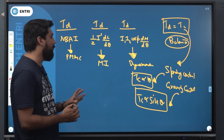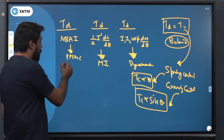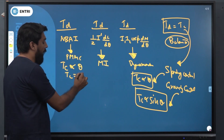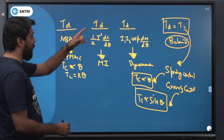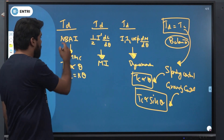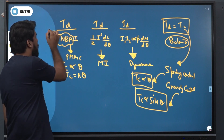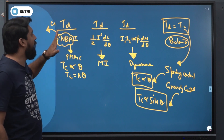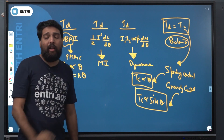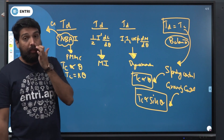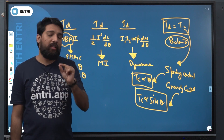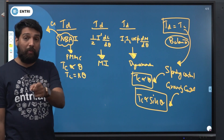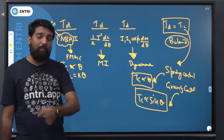In the balance condition, we equate the controlling torque to the deflecting torque, i.e., Td equals Tc. We can use constant G as a replacement in this equation. Deflecting torque G is a constant, and the deflecting torque is defined by this relationship.